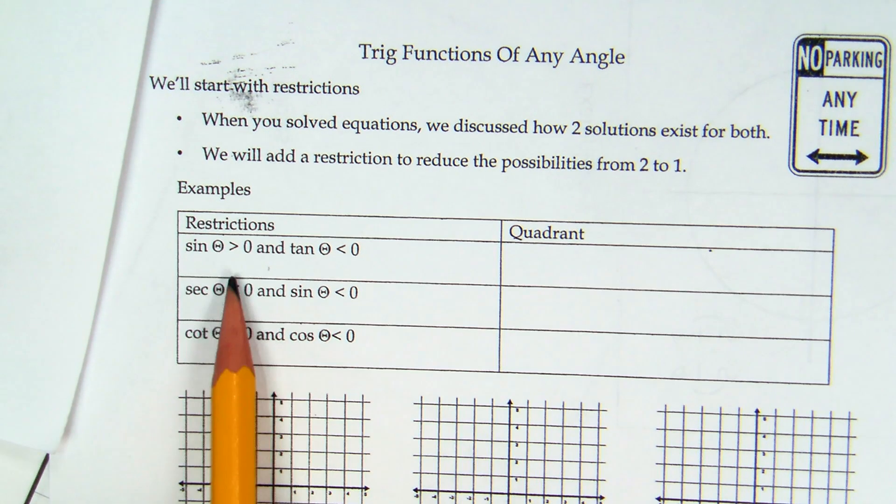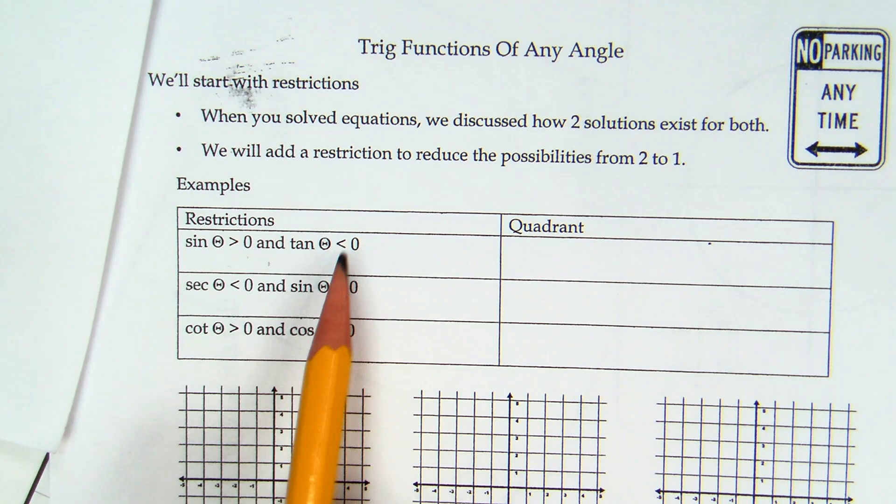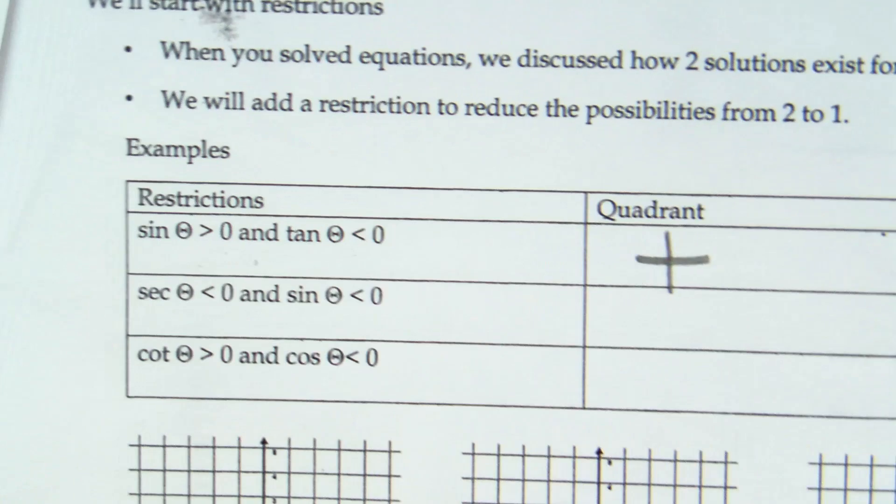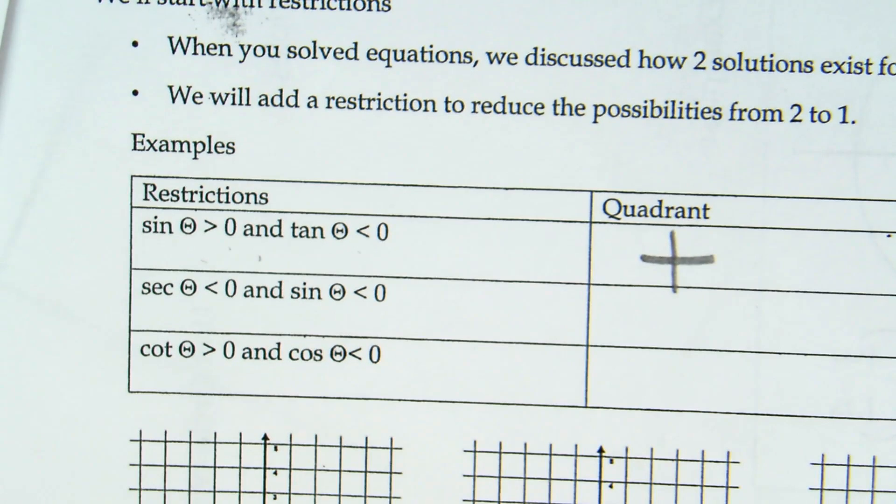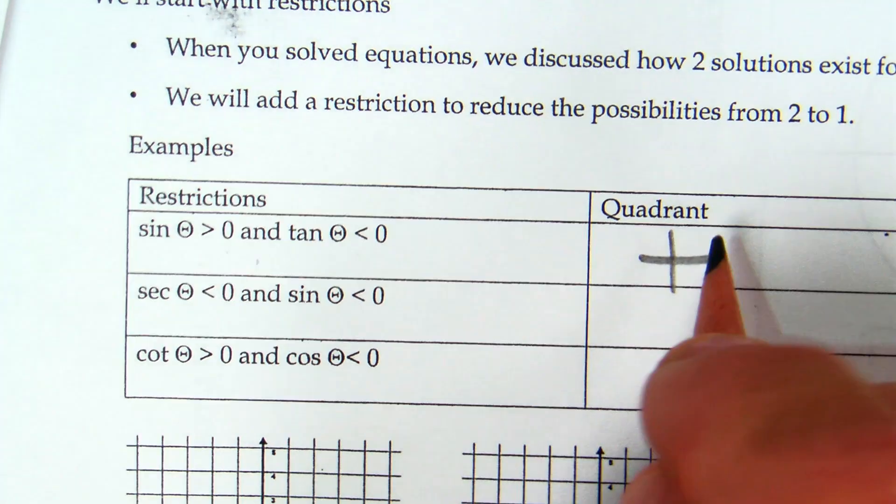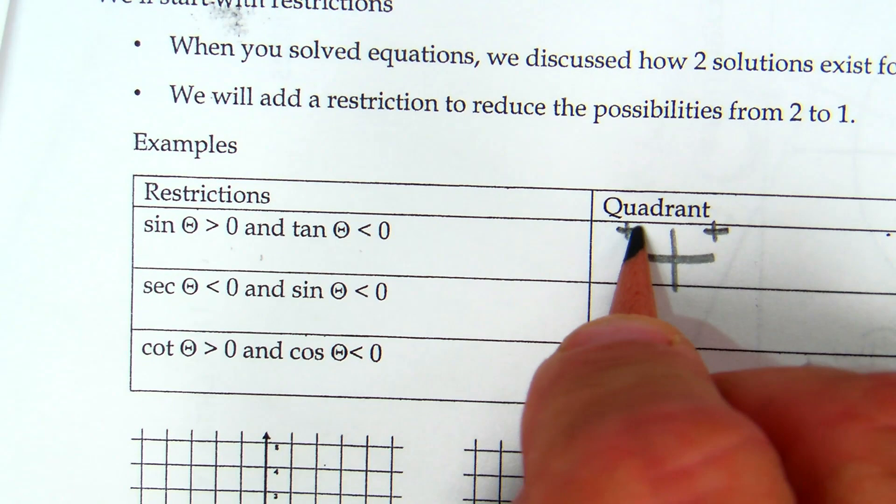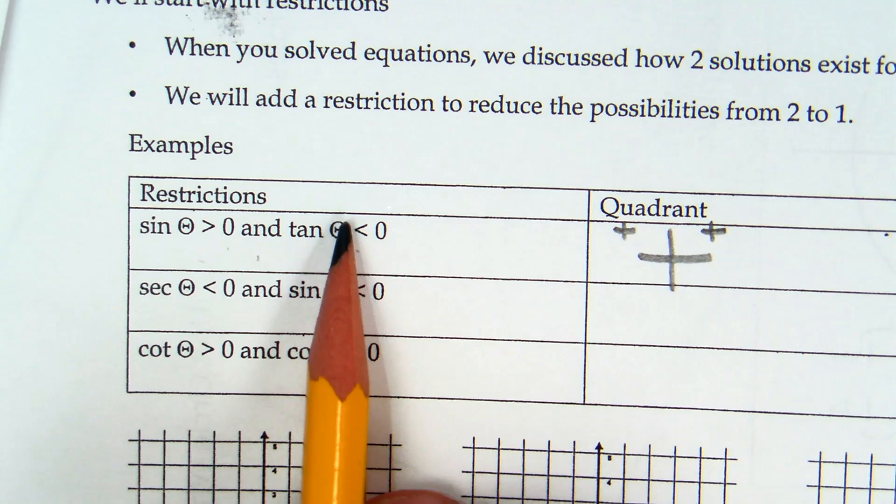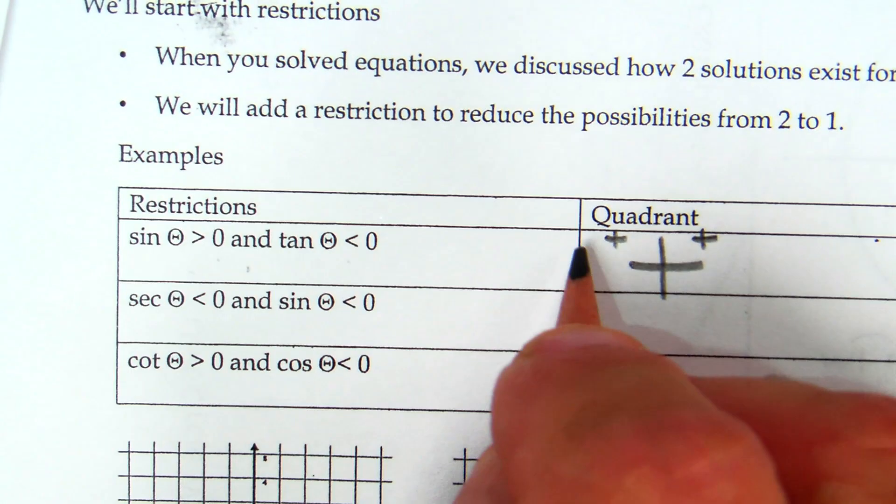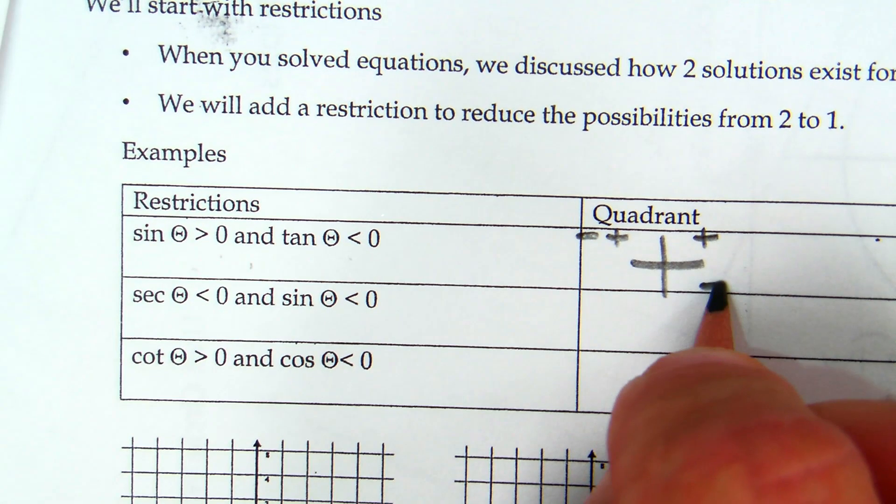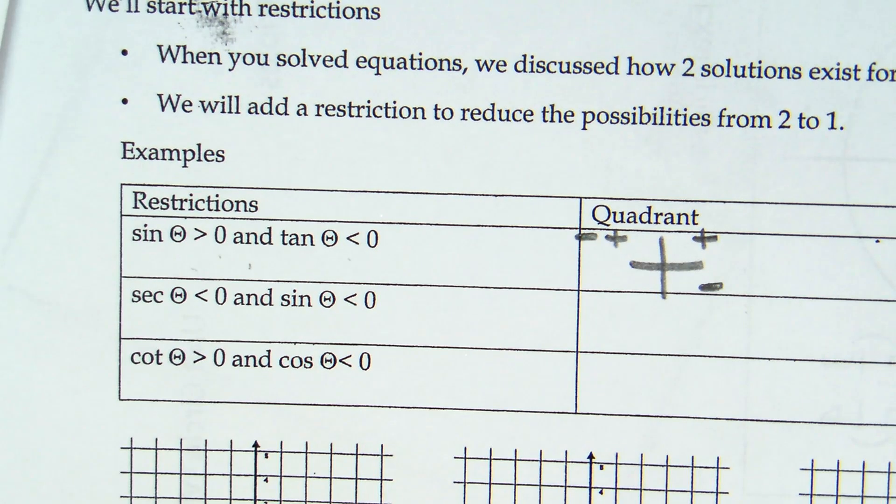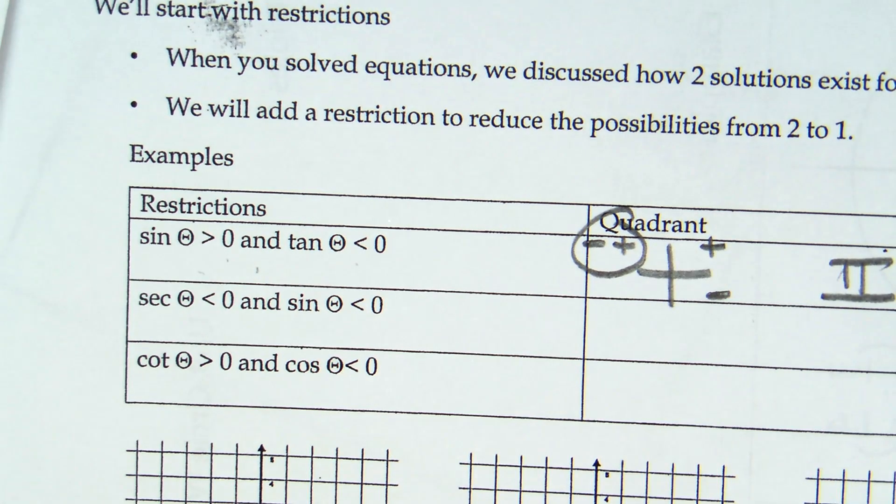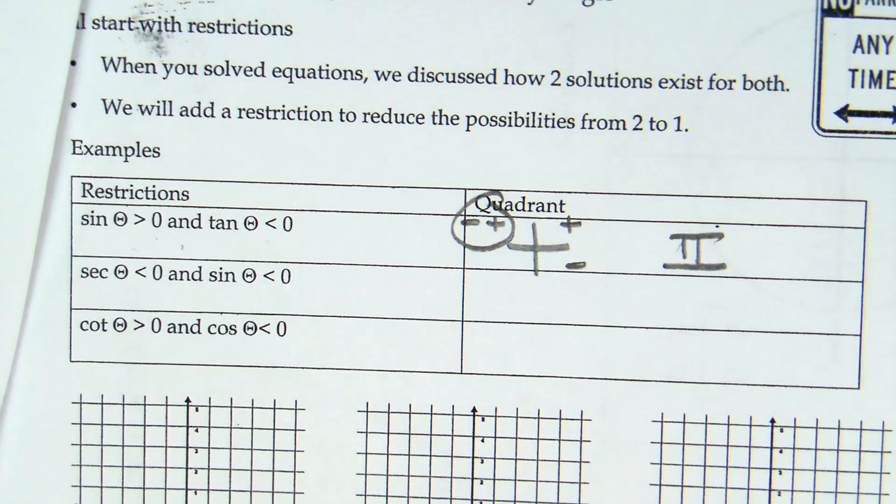They're going to tell you sine of theta is greater than zero, and tangent of theta is less than zero. This is all this involves—process of elimination, like a little puzzle. Sine is greater than zero in the first quadrant and the second quadrant. They then say tangent is less than zero, so it's negative. That happens in the second and the fourth. Which quadrant has both? That is my answer. Quadrant number two.